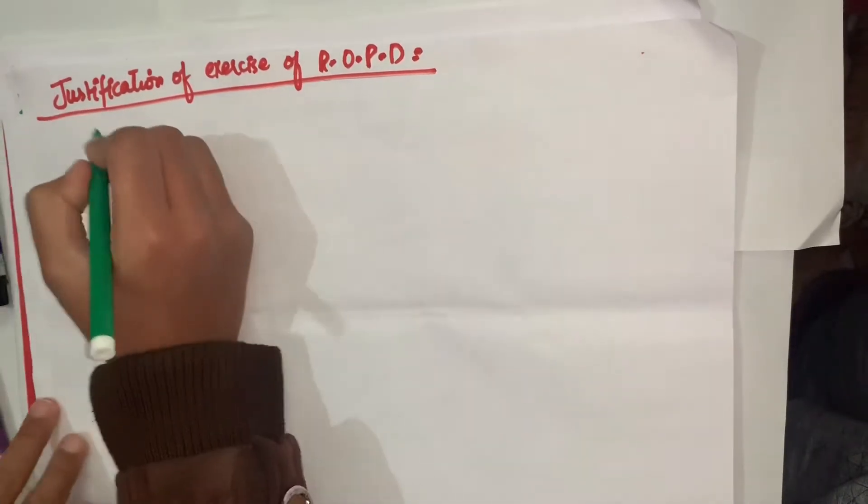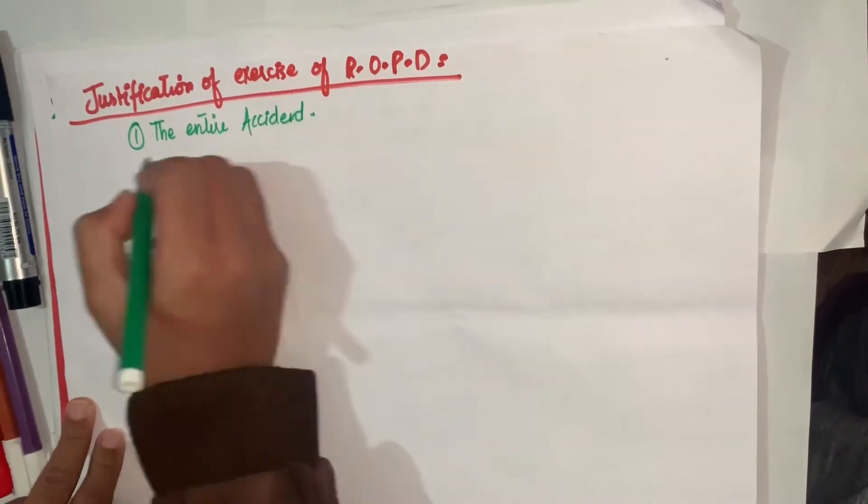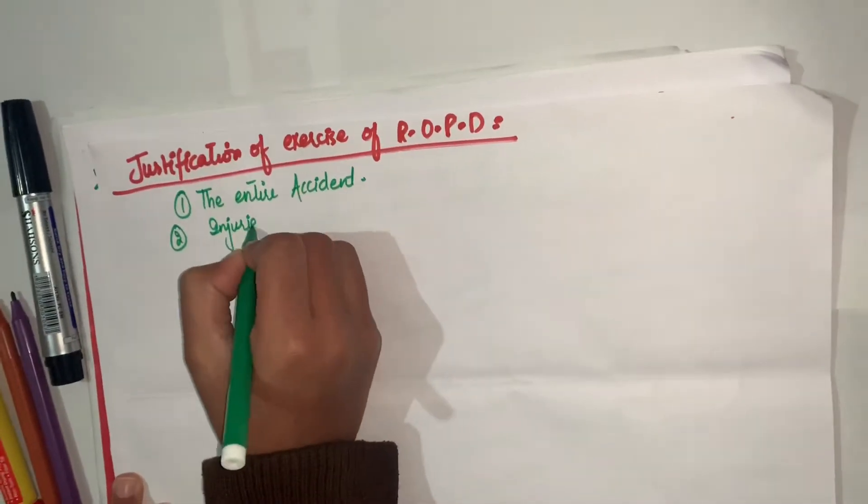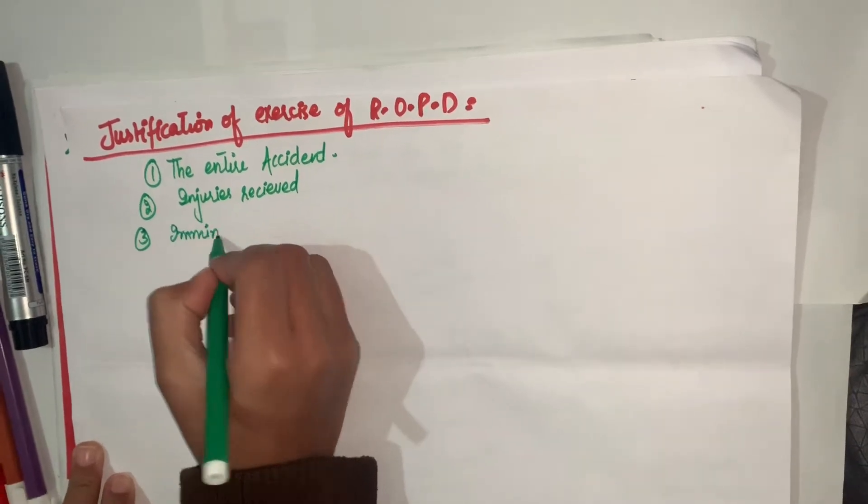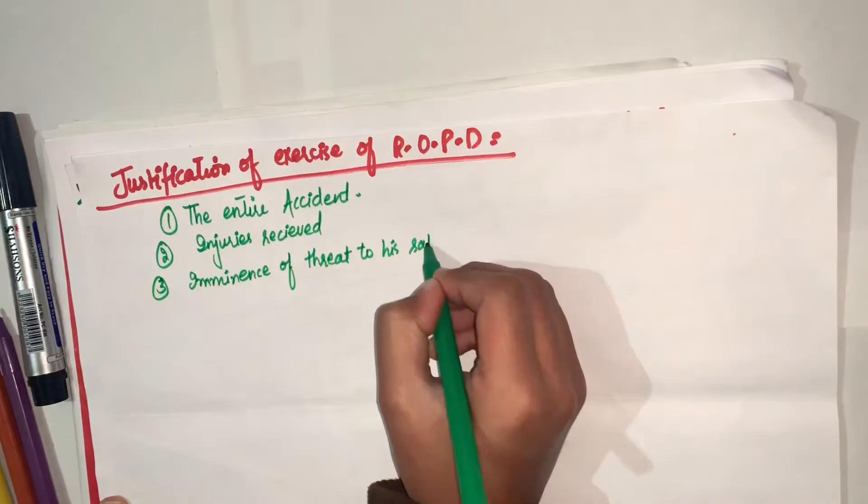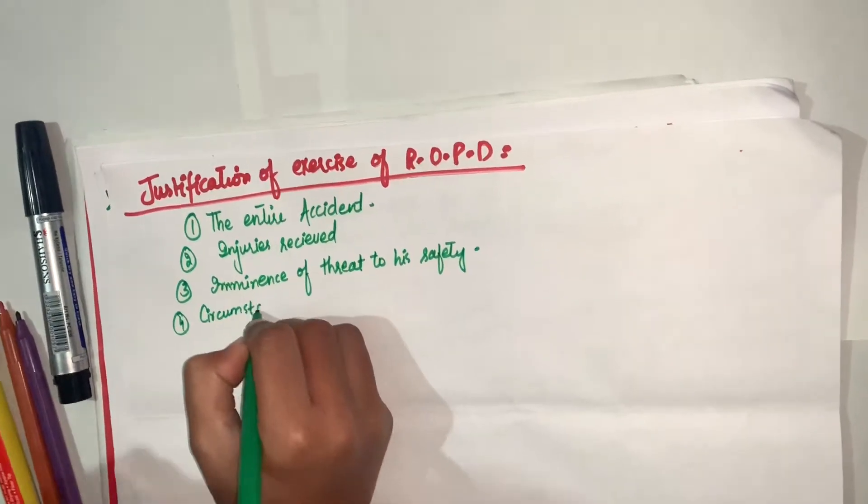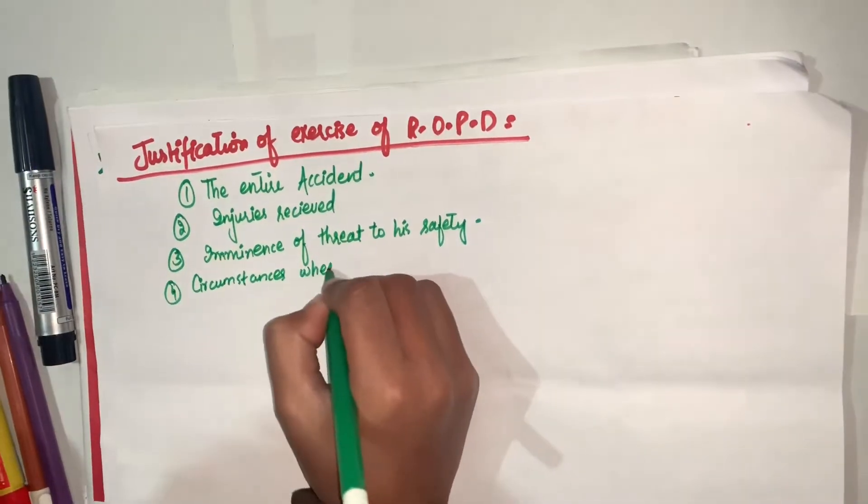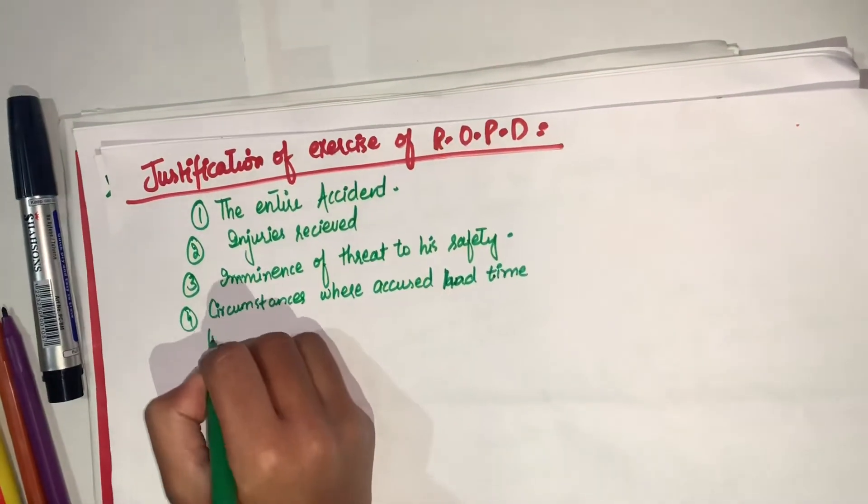How can we justify our exercise of right of private defense? Number one, the accused has to explain the entire accident. उसको ये बताना पड़ेगा कि उसने जो right of private defense exercise किया है तो उस पूरे incident में क्या क्या हुआ था. Number second, injuries received. उसको क्या क्या injuries मिली थी - either injury to property, injury to mind, injury to body.